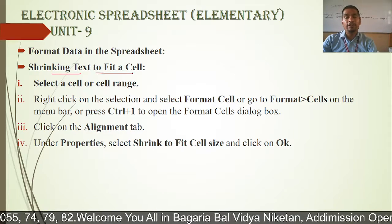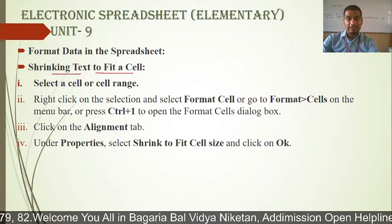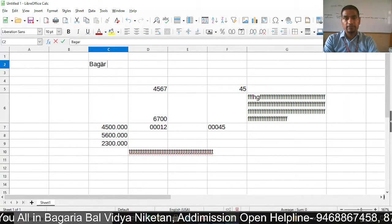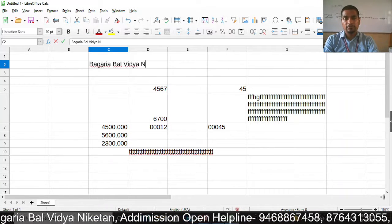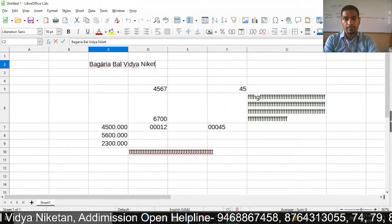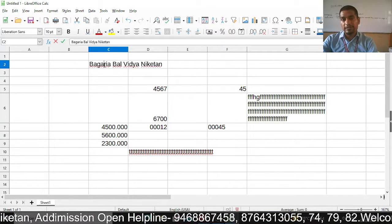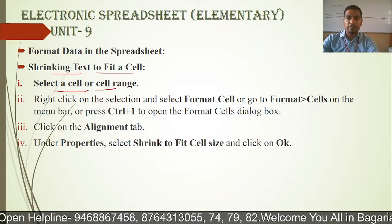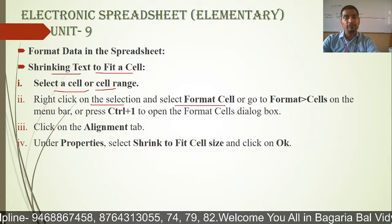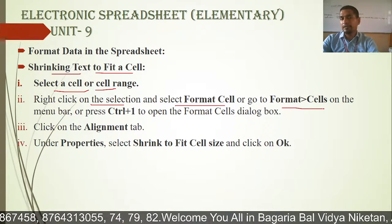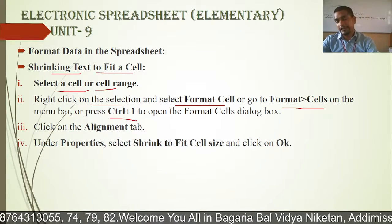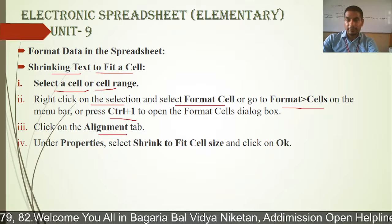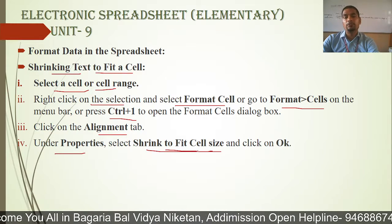Next, it comes to shrinking text to fit a cell. I have written names like Bagadiyah, Ligiah, Miketar here. If I want to fit this using shrink to fit, I select the cell or range, then right-click on the selection and select Format Cell. Go to Format > Cells to open the Format Cell dialog box. Click on the Alignment tab, go to Properties, and there is Shrink to Fit Cell Size. Click OK.